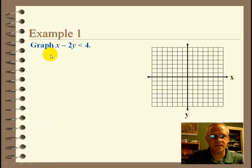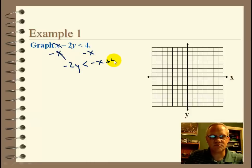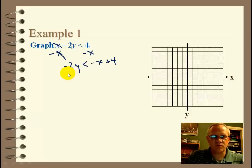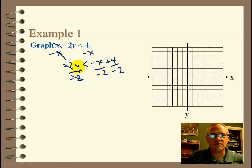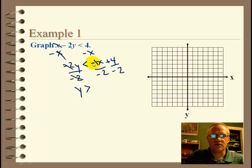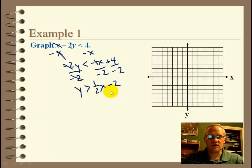Notice that the negative in front of the 2y is still there, so we have negative 2y is less than negative x plus 4. I suggest putting it in the order of y equals mx plus b — write negative x plus 4, not 4 minus x, so you don't get confused. Last step, we divide by negative 2. Alarm bells should go off — dividing by a negative means we flip the inequality sign. So y is greater than positive one-half x minus 2, since the negatives cancel, and 4 divided by negative 2 is minus 2.